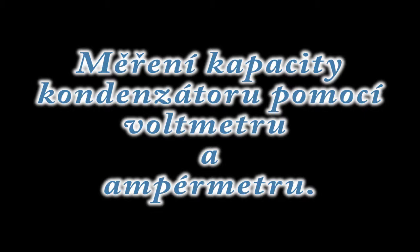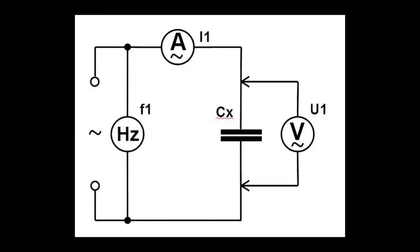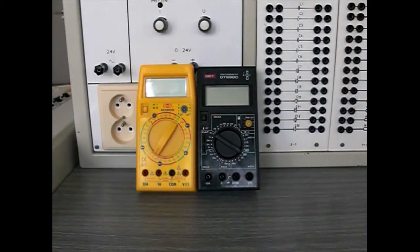Měření kapacity kondenzátoru pomocí voltmetru a ampérmetru. Zapojíme měřící obvod podle schématu. Zapojíme proudový okruh.